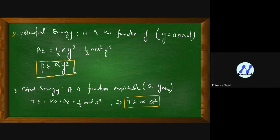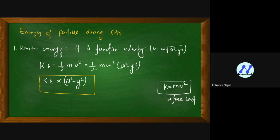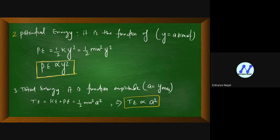The total energy equals the sum of potential energy and maximum kinetic energy. At the mean position, displacement y equals zero, so kinetic energy is maximum and velocity is maximum. At the extreme position, y equals A (amplitude), so velocity equals zero and kinetic energy is zero, while potential energy is maximum.